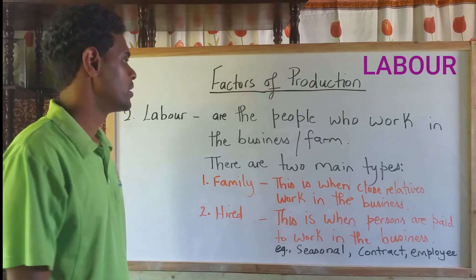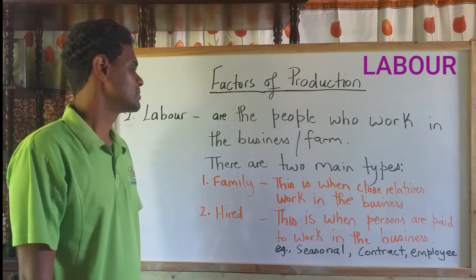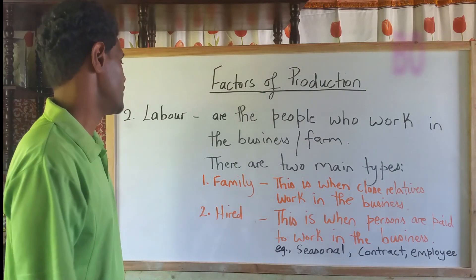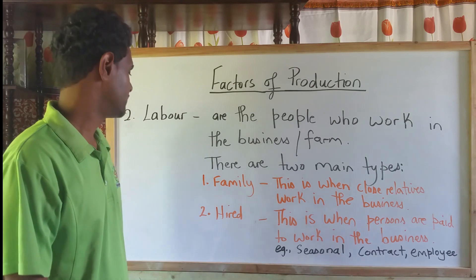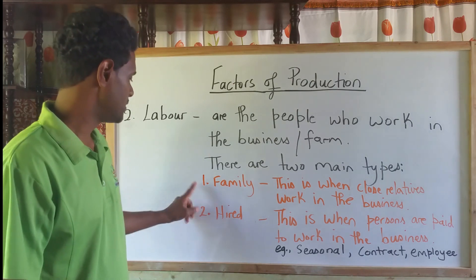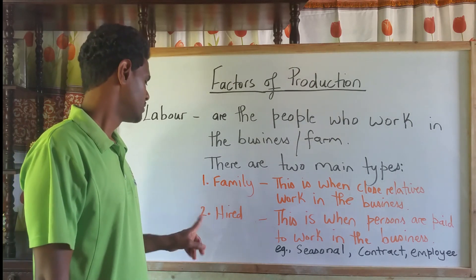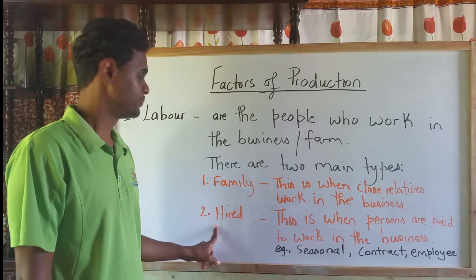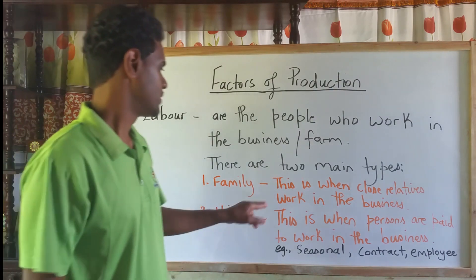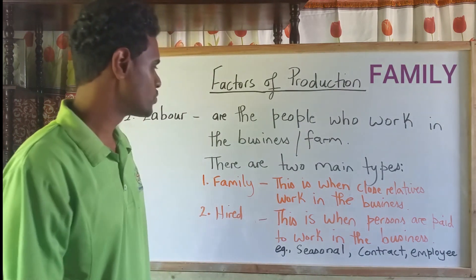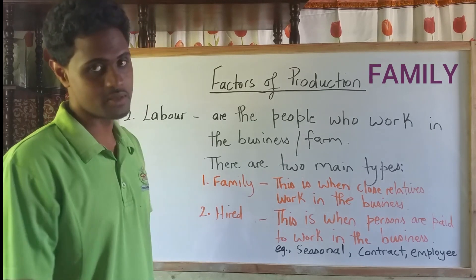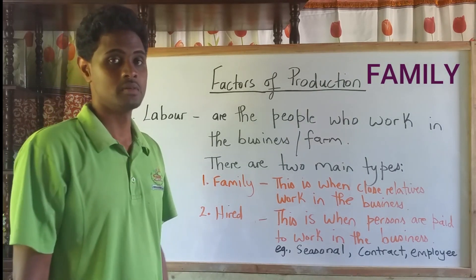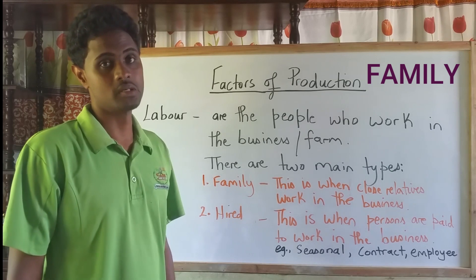Labour are the people who work in the business or on the farm. Now there are two main types of labour: one, family labour, and two, hired labour. Family labour is when close relatives work in the business — for example, mother, daughter, son, cousins, etc.